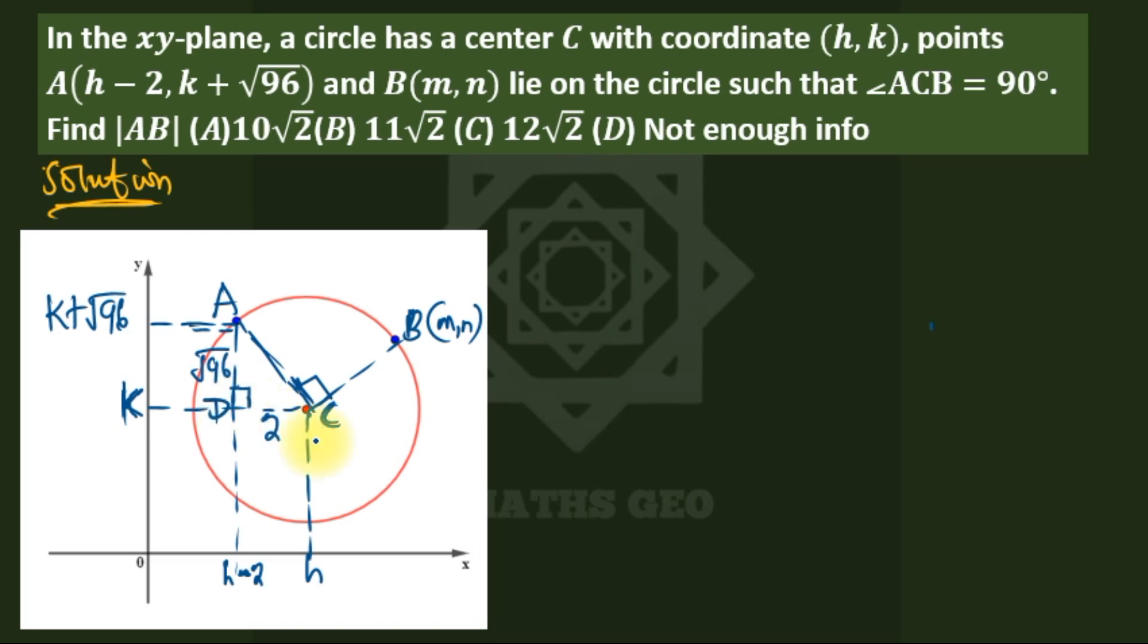So if we call here maybe D, using Pythagorean theorem you see that AC by Pythagorean theorem equals the square root of the sum of the squares of √96 and 2, which is 10. Because √96 is plus 4, and the square root of 100 is 10.